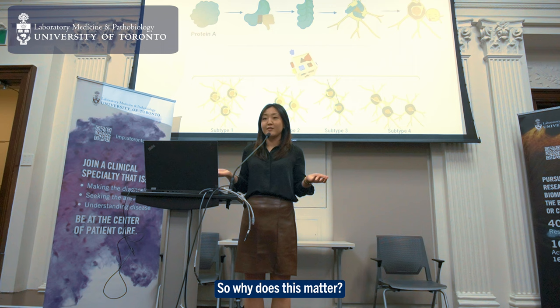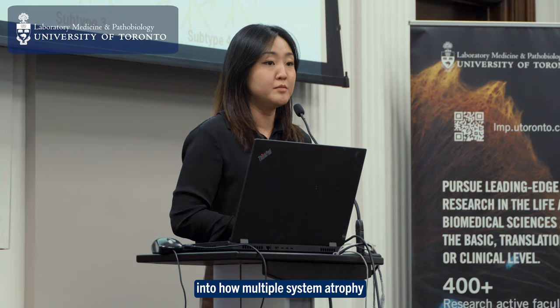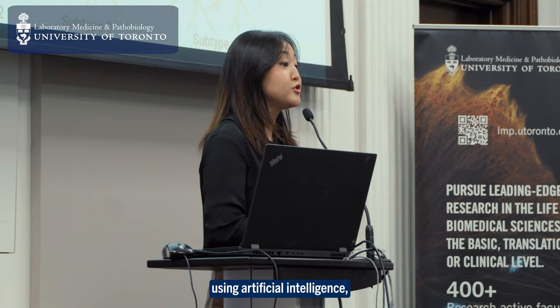So, why does this matter? The different size and shapes of these bad protein A's in the brain and the distinguishing factors associated with each subtype can give us insight into how multiple system atrophy can be further subclassified.